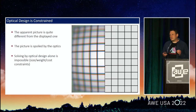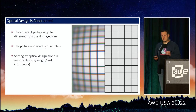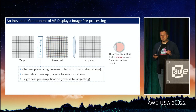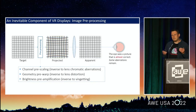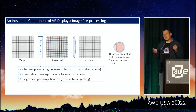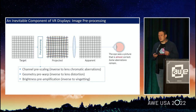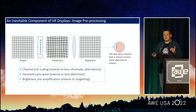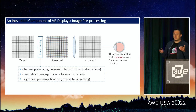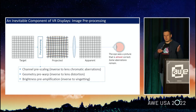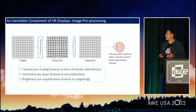So in mixed reality displays, there is another must-have component: image preprocessing, aimed at compensating those aberrations and distortions of the optical system. For example, it does channel pre-scaling to compensate for chromatic aberrations that happen in the lens. It does geometry pre-warp that is inverse to the geometry warp of the lens, etc.